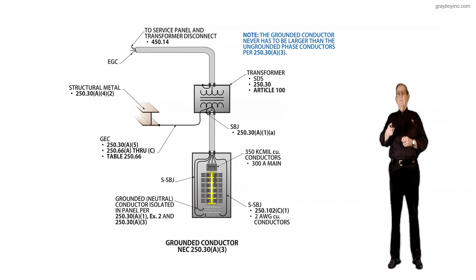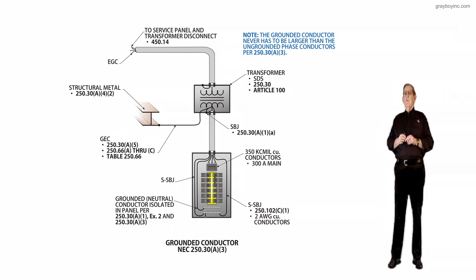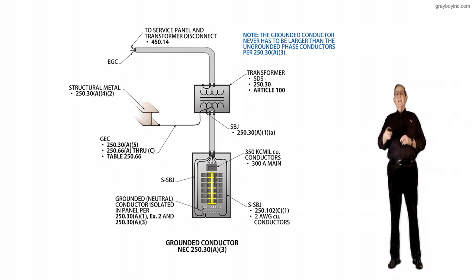If this was PVC now that was connecting the transformer to the panel, then you could ground it at the service or at the transformer, either one, but you'd have to take the XO loose if you grounded it down at the first disconnecting means.